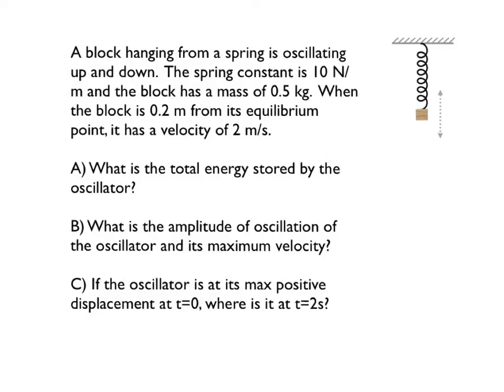We're going to find out three separate things about this oscillator. Number one, what is the total energy stored by the oscillator? Number two, what is the amplitude of oscillation and what is its maximum velocity? And number three, if the oscillator is at its maximum positive displacement at t equals 0, where is it at t equals 2 seconds? We'll solve each of these in turn and finally have an expression for how this oscillator behaves at any point in time.